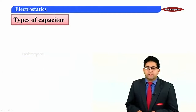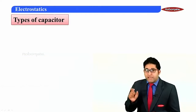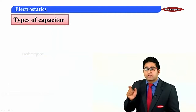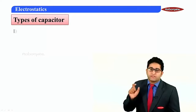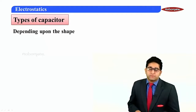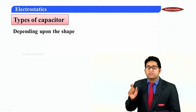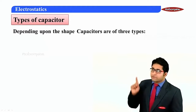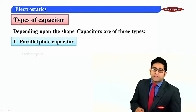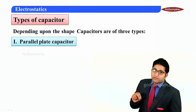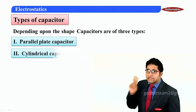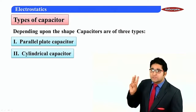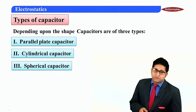When I say types of capacitors, based on the shape, capacitors are classified into three categories. The first type is a parallel plate capacitor, the second type is a cylindrical capacitor, and the third type is a spherical capacitor.